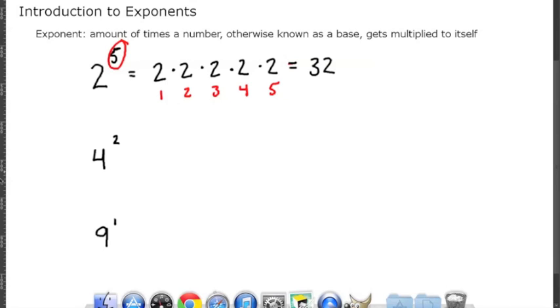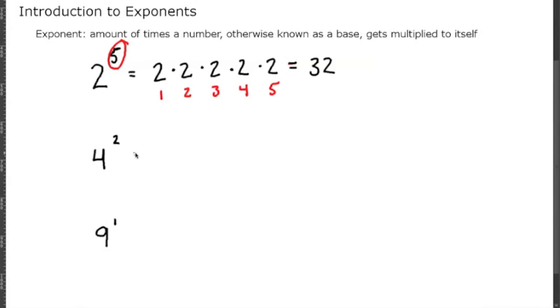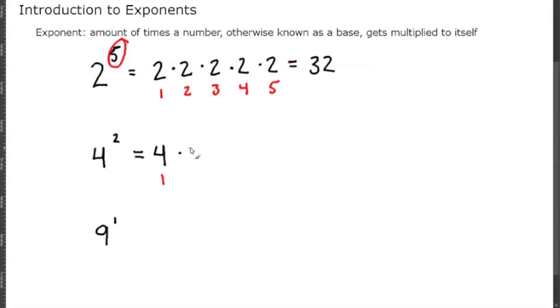In this example, 4 is our base and 2 is our exponent, so we're going to be multiplying 4 to itself 2 times: 4 times 4 equals 16. So 4 squared equals 16.